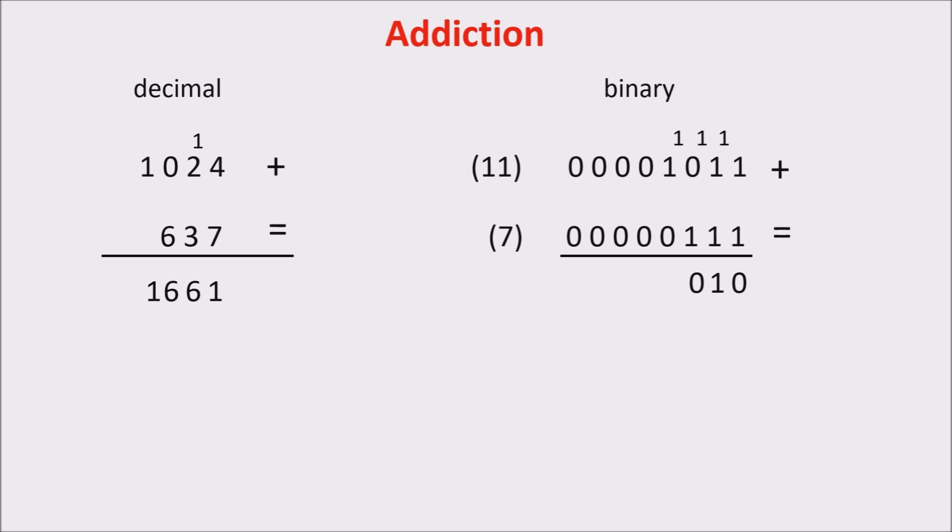Then, we have 1 plus 0 plus carry 1 equals 2, or 10. We write 0 and carry 1. Then, we have 0 plus 0 and carry 1, and this is equal to 1. So we write 1 with no carry. Later is always 0 plus 0 equals 0. The result is 18.